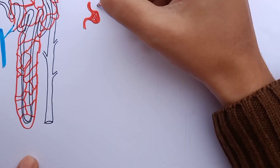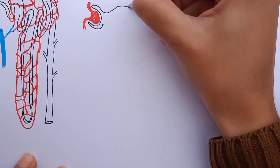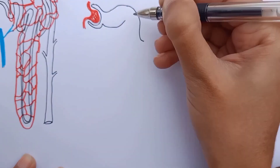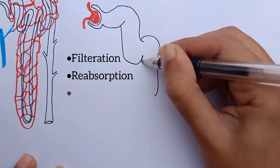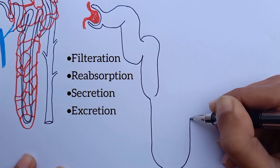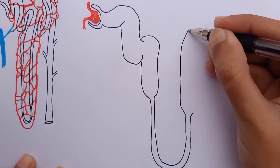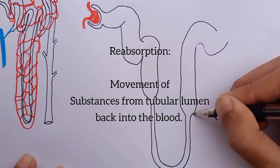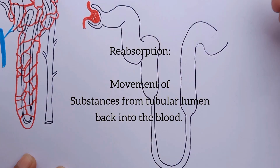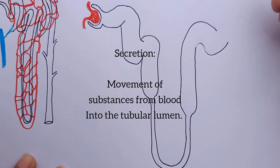Renal nephrons are important in urine formation. There are four steps of urine formation: filtration, reabsorption, secretion, and excretion. Remember, reabsorption refers to the movement of substances from the nephron back into the blood, while secretion refers to the movement of substances from the blood into the nephron lumen.